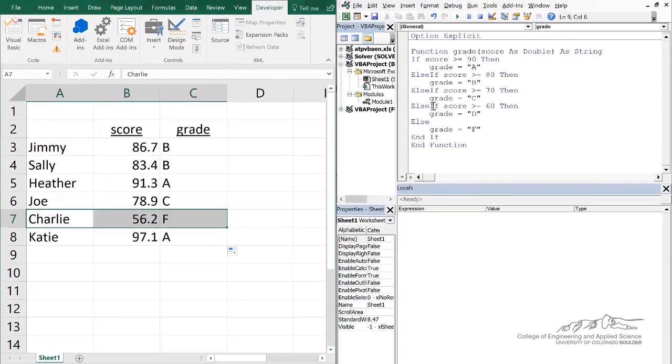That's how you can use multi-alternative if-then structures in VBA. In this case, I have implemented a VBA function, but you can also do this in VBA subroutines. Thanks a lot for watching.